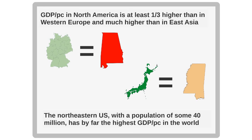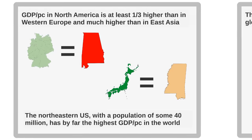The secondary core of the North American economy on the West Coast in California has some 30 million people and a GDP per capita in the range of $65,000 per year — on a par with Singapore, but many, many times the size.